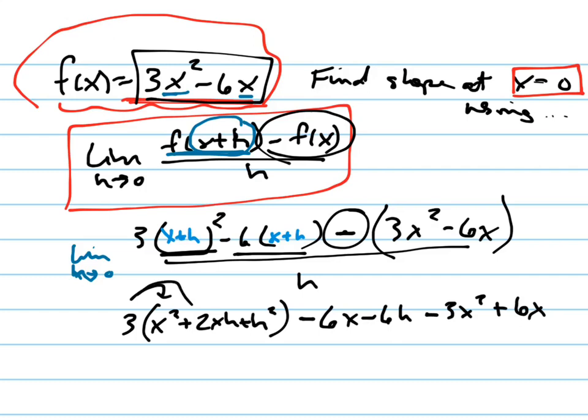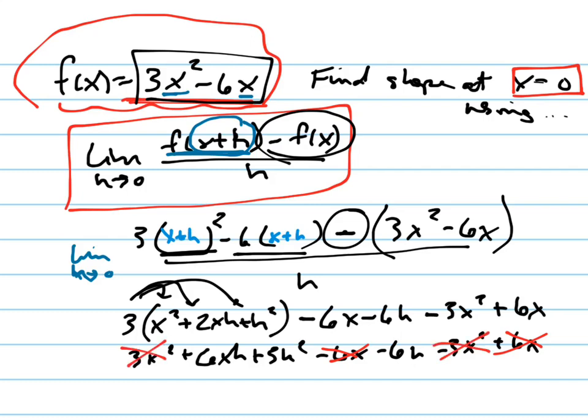Distribute this negative in right here. It's negative 3x squared plus 6x. Now distribute this 3 in here. That's 3x squared plus 6xh plus 3h squared minus 6x minus 6h minus 3x squared plus 6x. It seems very confusing and nasty, but things are going to cancel out. That's just what happens. Those go away. 3x and negative 3x squared go away.